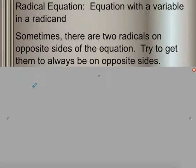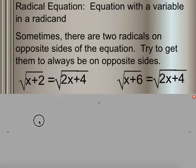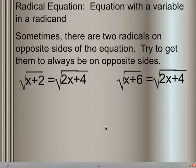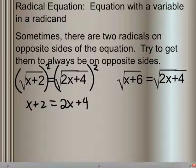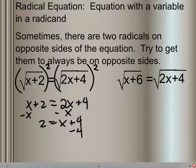Now, what happens if there are more than just one radical? That's when we have to get them to opposite sides of the equation so that we can square both sides. This is an example of what it might look like. We have our radicals each on their own side and we go ahead and square them, so that we get x plus 2 is equal to 2x plus 4. Now we can do our normal operations — subtracting x from each side and subtracting 4 from each side — and we get x is equal to negative 2.